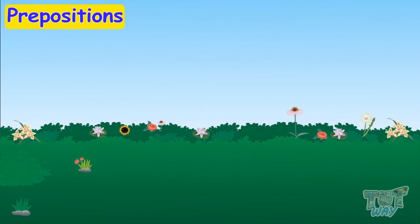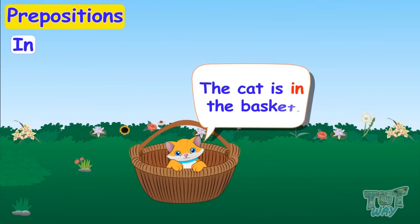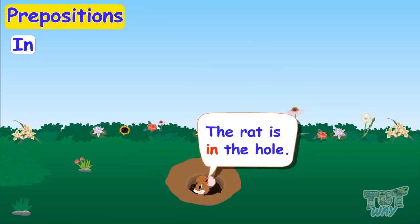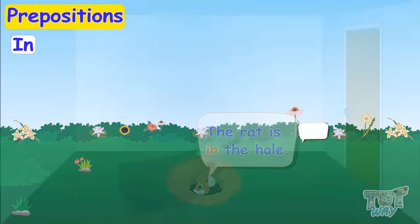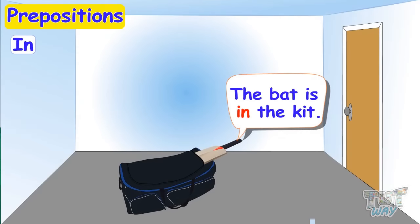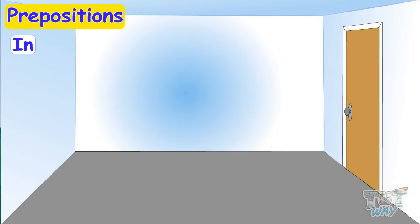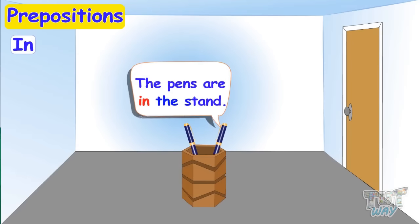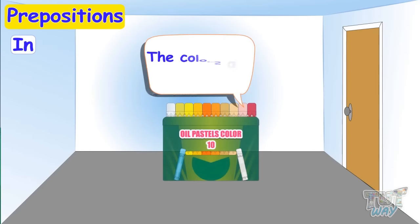The first preposition we are going to learn about is 'in'. The cat is in the basket. The rat is in the hole. The bat is in the kit. The toys are in the basket. The pens are in the stand. The colors are in the box.